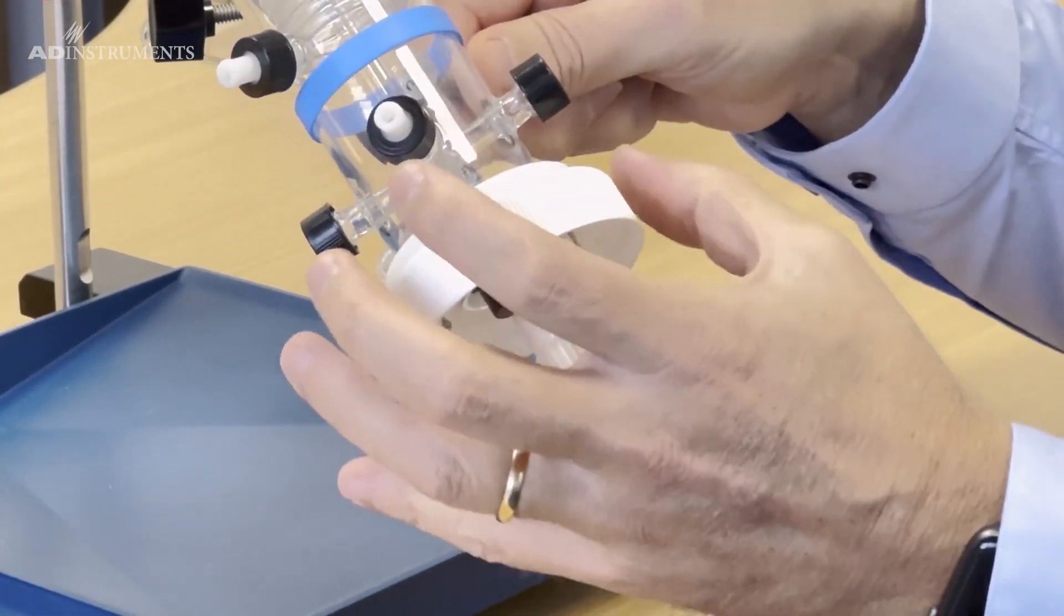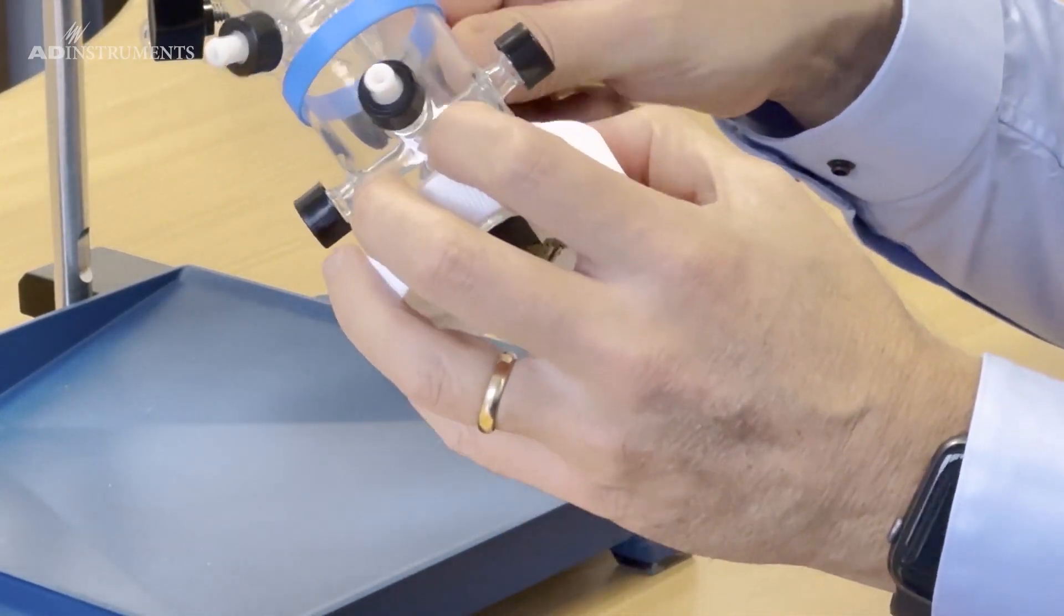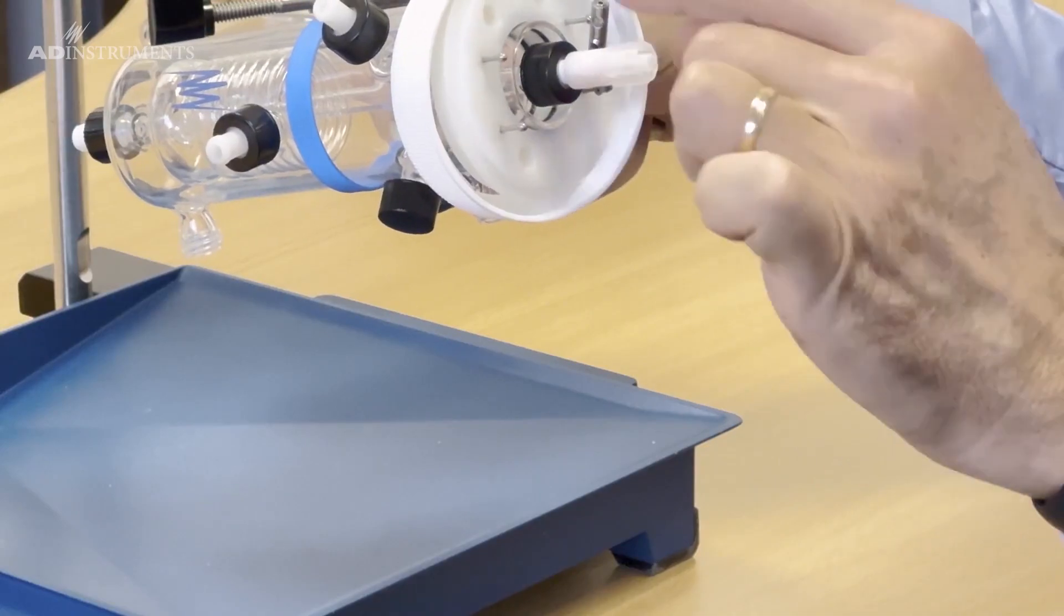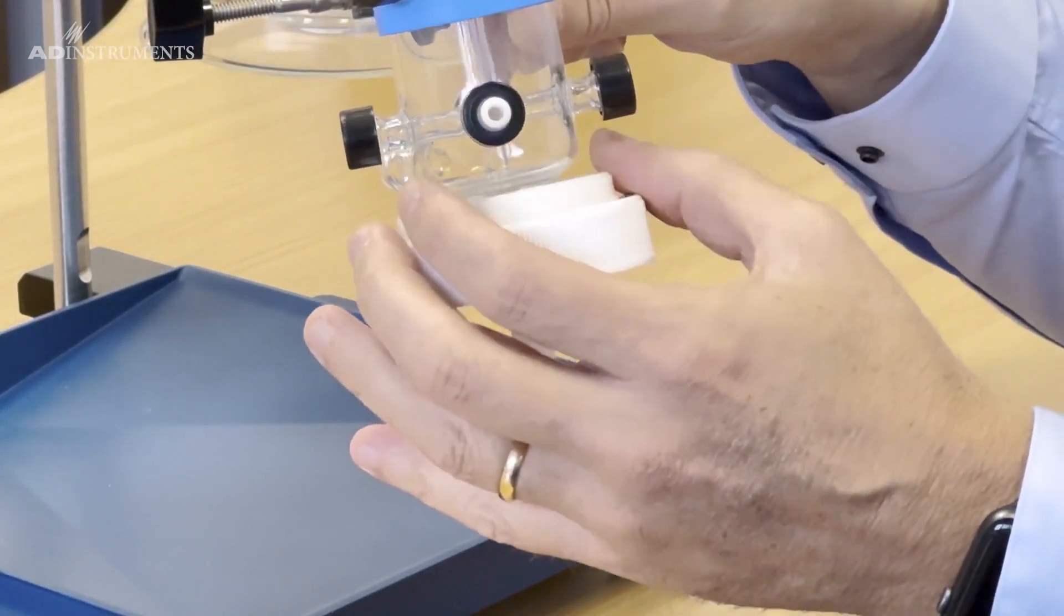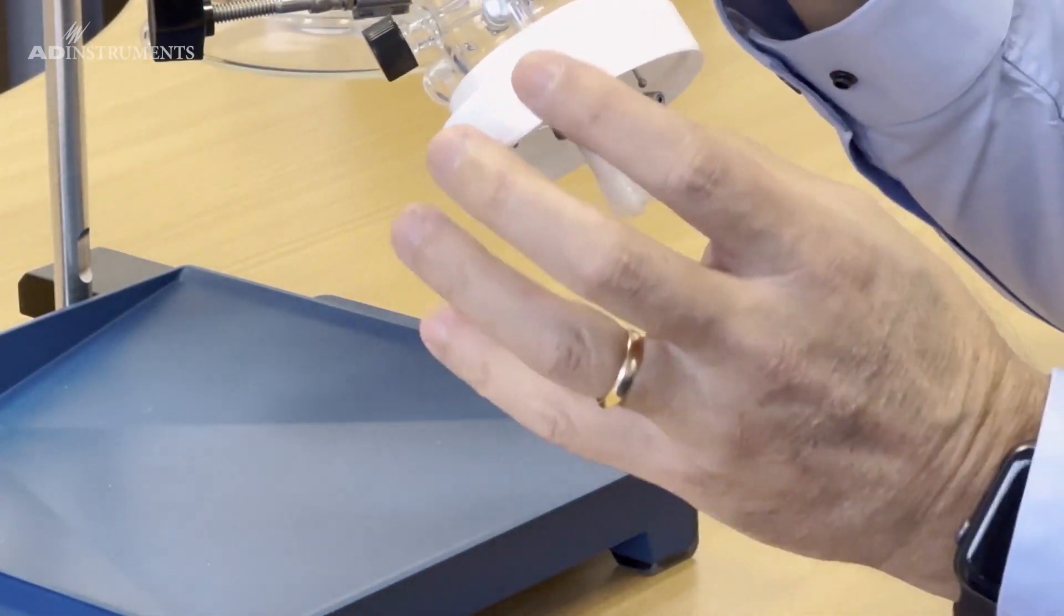At the bottom here, this is the lid for the heart chamber which has already been attached over this glass sheath. This is where the actual heart chamber will screw into.